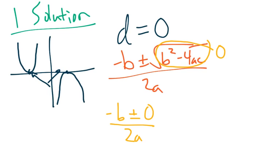And since we're just adding or subtracting zero, we don't even need that in there. And so the solution, the one spot that's going to hit the x-axis is at negative b over 2a. That's just what it is. And so there's only one solution.